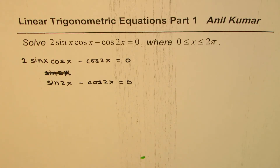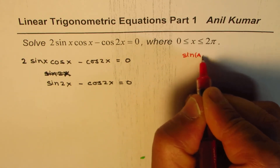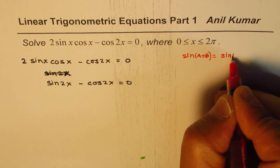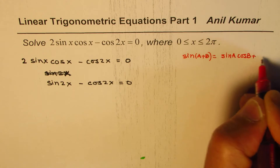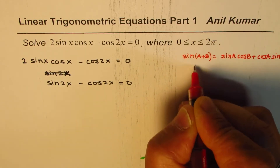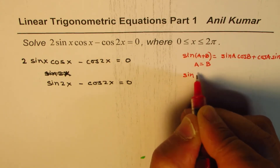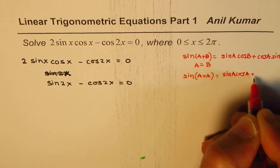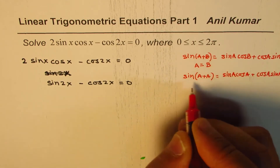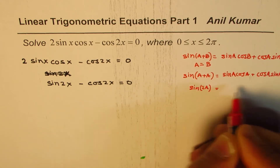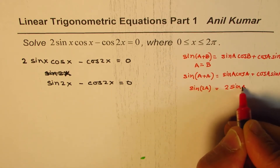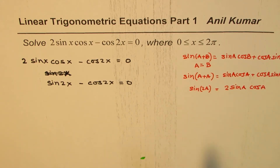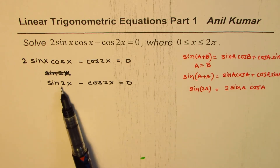We get this from the sin(a + b) formula. Sin(a + b) = sin a cos b + cos a sin b. If a equals b, then we write sin(a + a) = sin a cos a + cos a sin a, which gives sin 2a = 2 sin a cos a. So in our case with argument x, 2 sin x cos x = sin 2x.